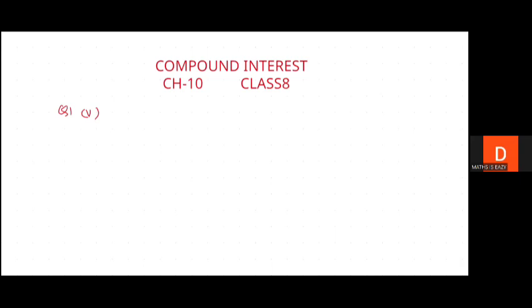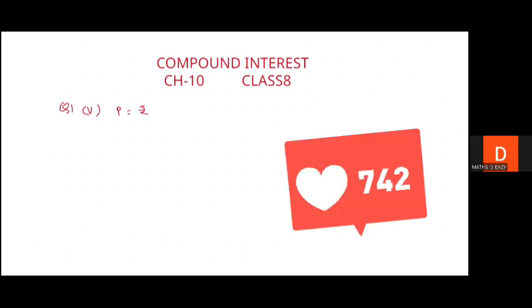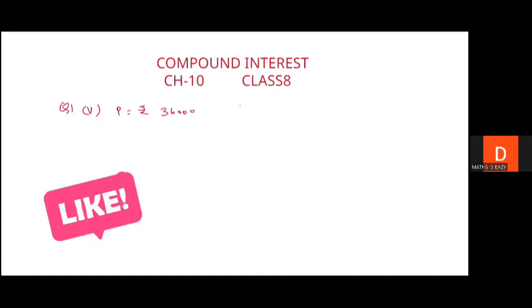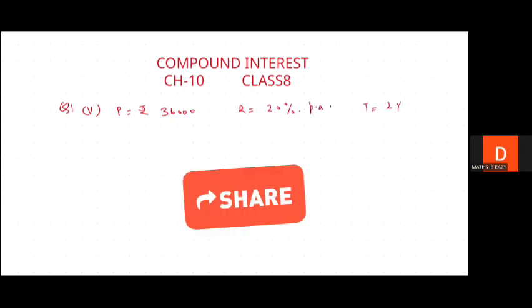Principal is given as rupees 36,000. Rate is given as 20% per annum, and time is given as 2 years. So how to solve it?